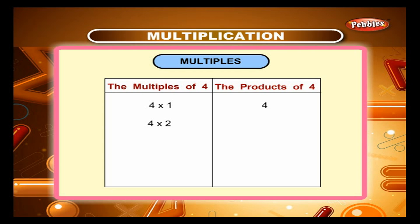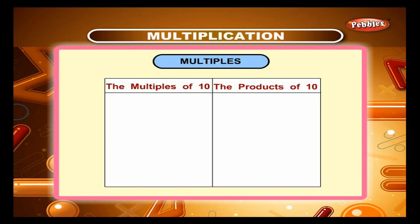4 into 4 which is 16, 4 into 5 which is 20 and so on. The multiples of 10 are: 10 into 1 which is 10, 10 into 2 which is 20, 10 into 3 which is 30, 10 into 4 which is 40, 10 into 5 which is 50 and so on.